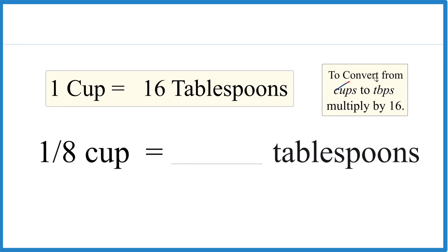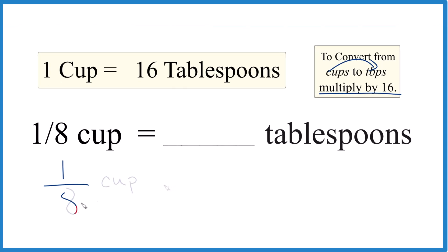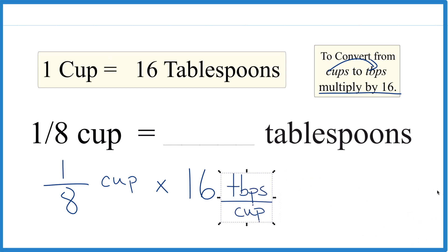When we go from cups to tablespoons, we multiply by 16. So we take one-eighth of a cup and multiply that by 16. Remember, it's 16 tablespoons per cup.